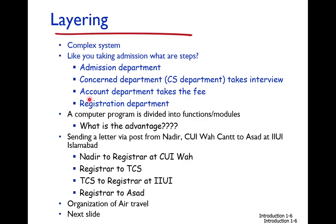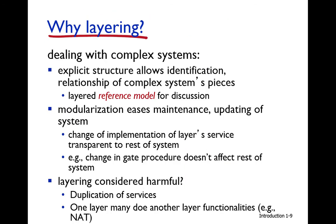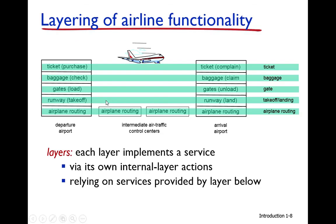So, up to now: whenever we have a complex system we divide it into sub-parts, subsystems, and functions, and each subsystem is solved individually. This makes it easier to deal with complex systems. Dividing into layers provides explicit structure, allowing identification of the relationships between the complex system's pieces — each layer has a defined function.